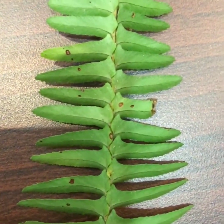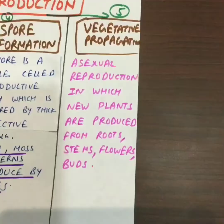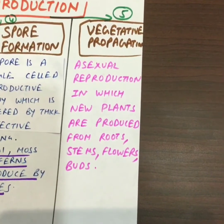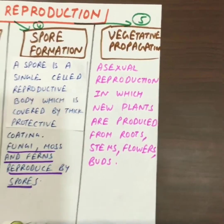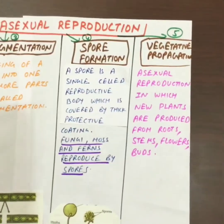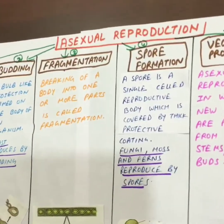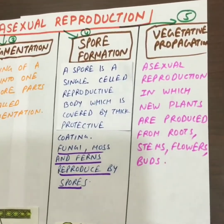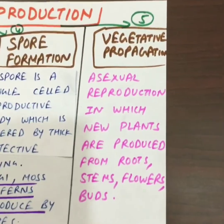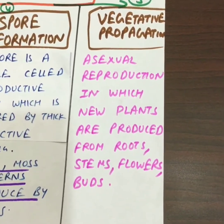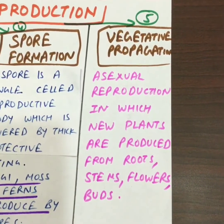Let us now learn about vegetative propagation, the fifth type of asexual reproduction. Asexual reproduction in which new plants are produced from roots, stems, flowers, and buds is called vegetative propagation.